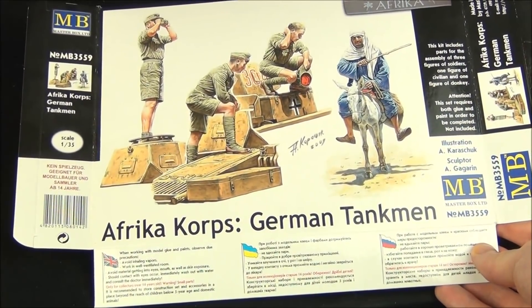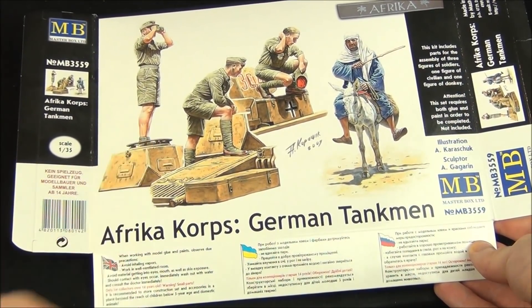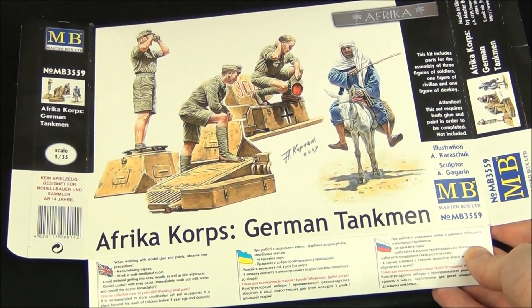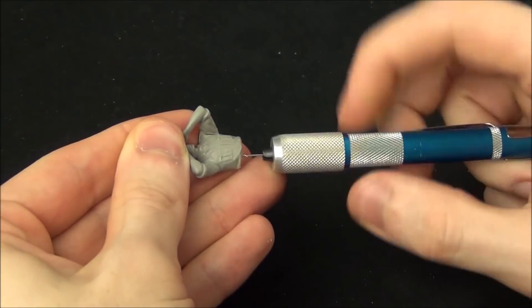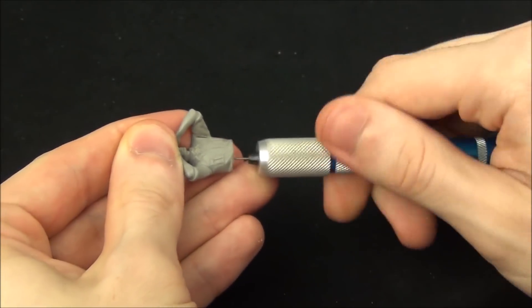So let's get started. To begin I had to of course build the figure. He was this guy from this Master Box set. I'm not going to bore you with the assembly, but the main important thing is to mount him on a little handhold.